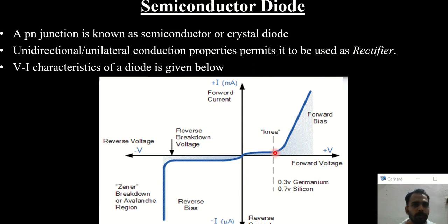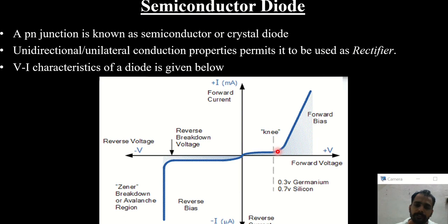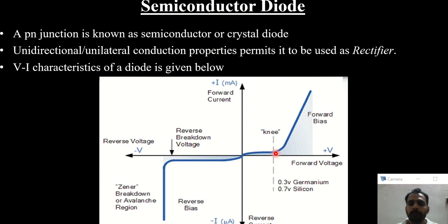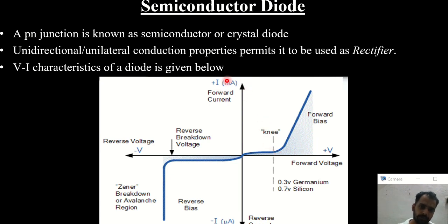The particular voltage at which current starts to conduct is called the knee voltage — the voltage required to overcome the potential barrier. For a germanium diode it is 0.3 V and for a silicon diode it is 0.7 V. Beyond the knee voltage, current starts to flow and the forward current is of the order of milliamperes.